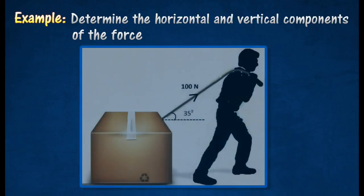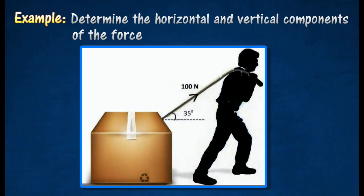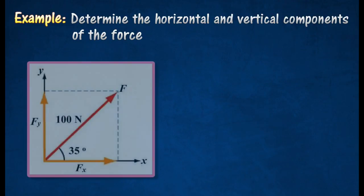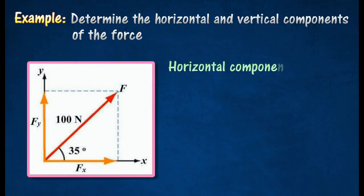The diagram shows a man is pulling a load with a force of 100 newton, acting at an angle of 45 degrees to the floor. The horizontal component of the force that causes the man to move forward is 100 newton cos 35 degrees.